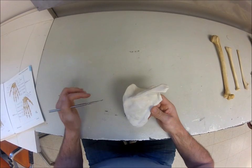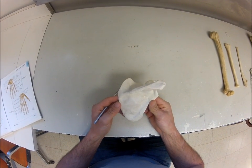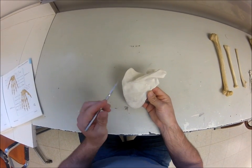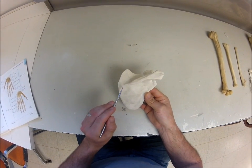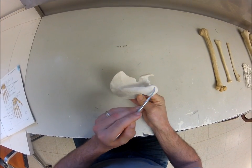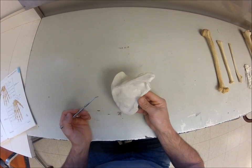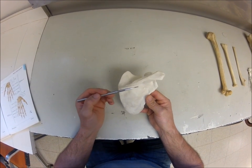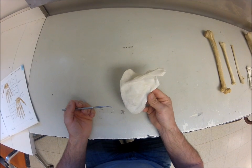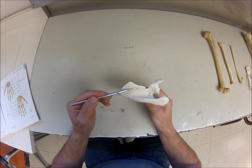For the upper extremity osteology, we'll start with the scapula. Looking at the posterior side, the first feature you're going to notice is the spine. Follow the spine all the way out — it ends in this flat blade-like process called the acromion process. Going below the spine of the scapula, this area is called the infraspinous fossa.